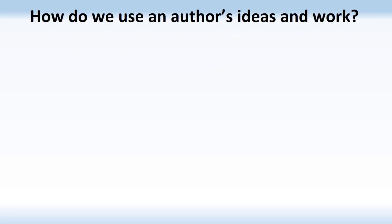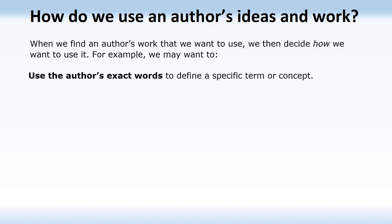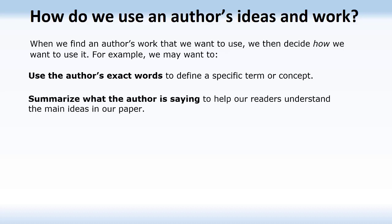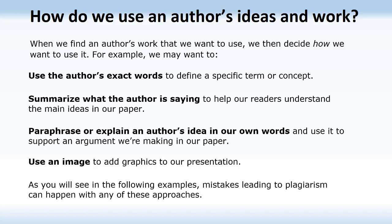How do we use an author's ideas and work? When we find an author's work that we want to use, we then decide how we want to use it. For example, we may want to use the author's exact words to define a specific term or concept, summarize what the author is saying to help our readers understand their main ideas, paraphrase or explain an author's idea in our own words to support an argument, or use an image to add graphics to our presentation. Mistakes leading to plagiarism can happen with any of these approaches.